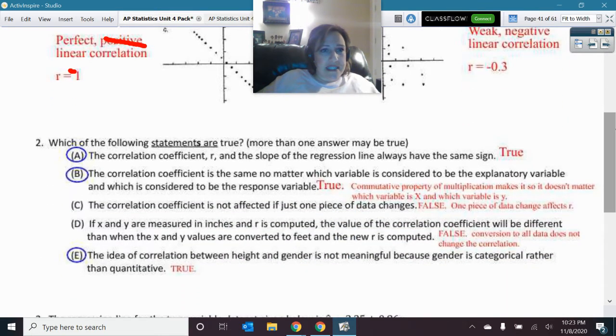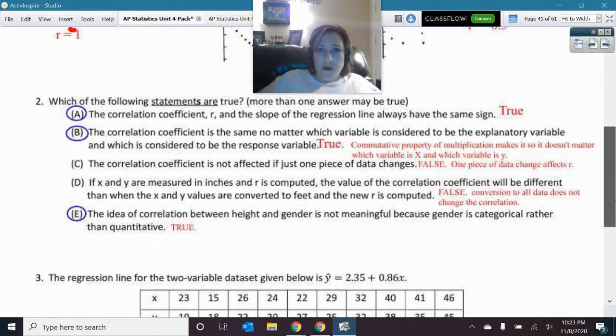Okie dokie, next, which of the following statements are true? There could be more than one. A, B, and E were true, and I wrote in there what makes the other ones false, and so you can read that if you had a question there.